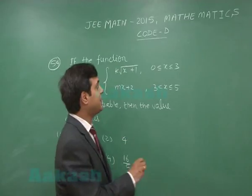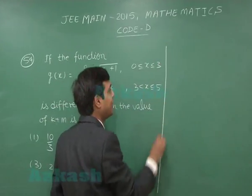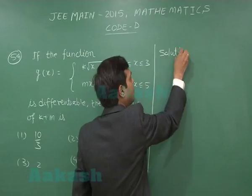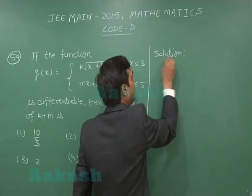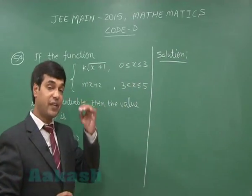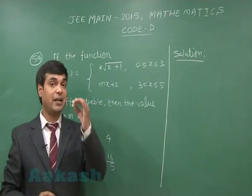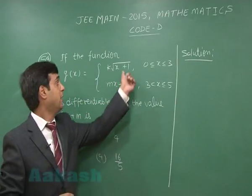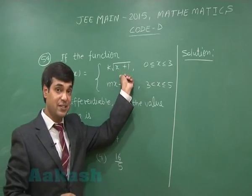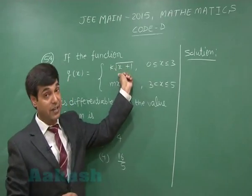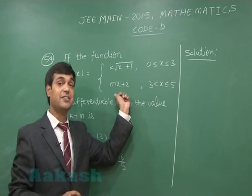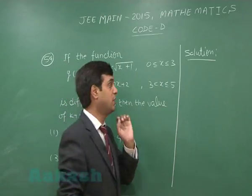Since the function is differentiable, it clearly has to be continuous as well. Using the concept of continuity — left-hand limit equals right-hand limit equals value of the function — we put x as (3 minus h) and also (3 plus h) under the limit as h approaches 0.